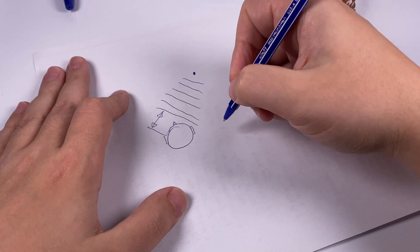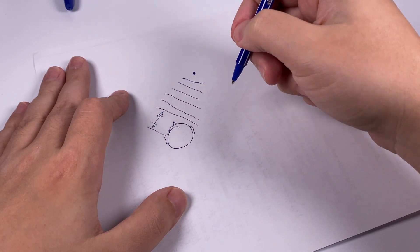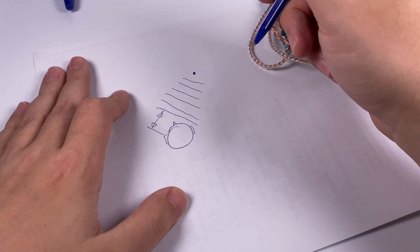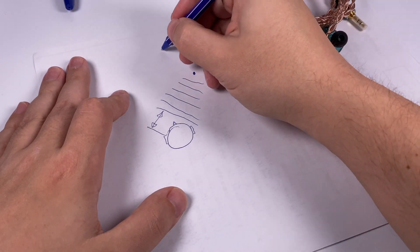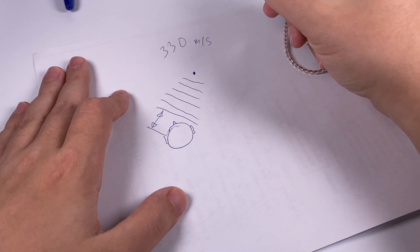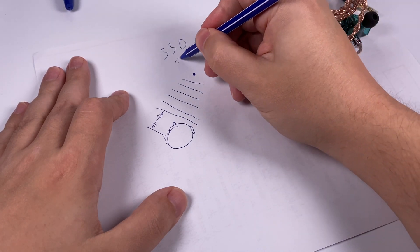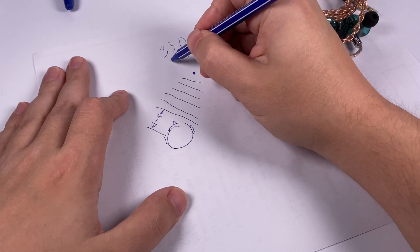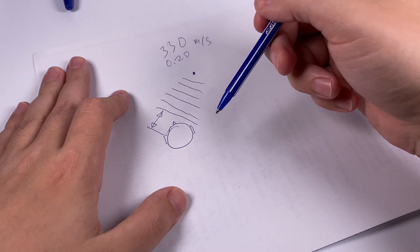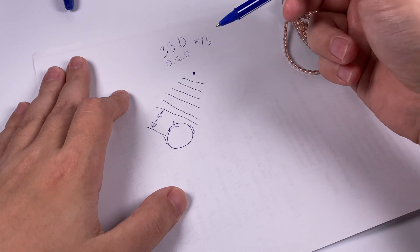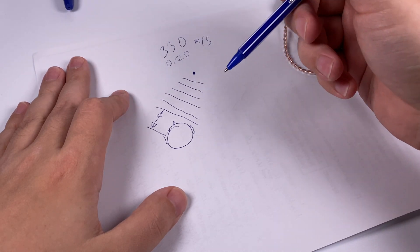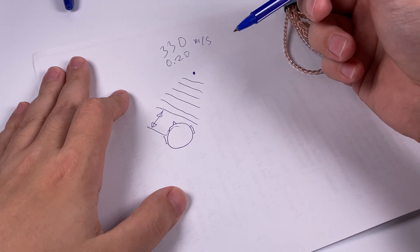The delay between the sound getting to the right ear and to the left ear is small. We can calculate it. The speed of sound is 330 meters per second in air, and a regular head has a distance between ears of about 20 centimeters or 0.2 meters. It appears that our brain is really good at measuring such a small difference, a few milliseconds.